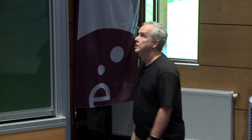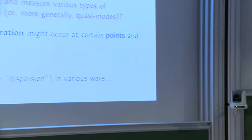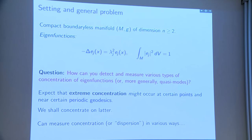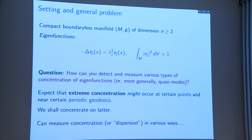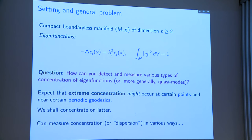The setting is manifolds without boundary, compact, with a metric G, and dimension two or more. The Laplacian is negative and lambda_j is the frequency, i.e., the eigenvalue corresponding to the first-order operator which is the square root of minus the Laplacian. All the eigenfunctions are L2 normalized, DV is the volume element, and the Laplacian comes from the metric. A vague question is: how can you detect and measure various types of concentration of these eigenfunctions?